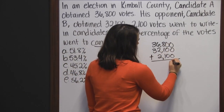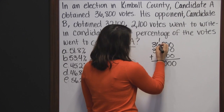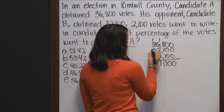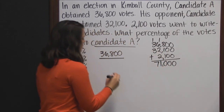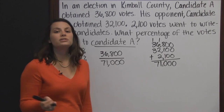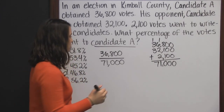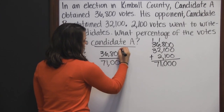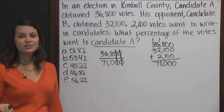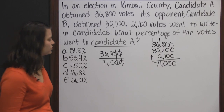Adding those up: the ones and tens give zeros, the hundreds column gives zero with carry one, the thousands column gives eleven with carry one, and we get seventy-one thousand total votes. Now to find our percent, we divide 36,800 by 71,000. Before dividing, I'll simplify this fraction by canceling two zeros. So now my division is three hundred sixty-eight divided by seven hundred ten. I'm going to add a decimal and a zero, then divide 710 into 3680.